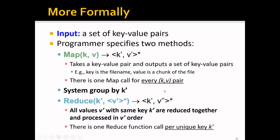More formally, MapReduce takes as input a set of key-value pairs and the programmer specifies two methods: a Map method and a Reduce method. The Map method takes a key-value pair — for example, the key can be a file name and the value a chunk of the file — and outputs a set of key-value pairs. There is one Map call for every key-value pair. Between Map and Reduce, the system groups all key-value pairs by key automatically. The Reduce function then reduces all values with the same key together and outputs a single key-value pair, with one Reduce call per unique key.